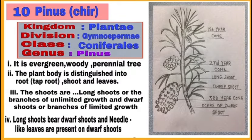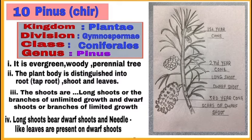Pinus is a gymnosperm having naked seeds — seeds are not enclosed in fruits in gymnosperms. Write the characteristic features after writing the classification. First, it is an evergreen, woody, perennial tree. Second, the plant body is distinguished into root, which is a taproot, shoot, and leaves. Third, shoots are of two types: long shoots or branches of unlimited growth, and dwarf shoots. Needle-like leaves are present on dwarf shoots. You can note all these points in the diagram. Draw it in your notebook and label all parts.